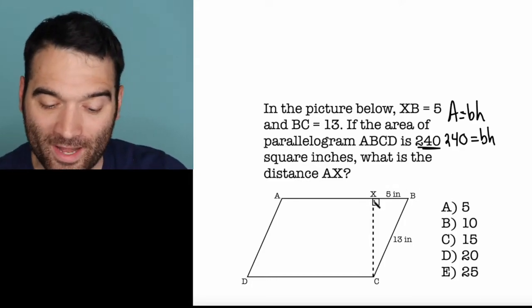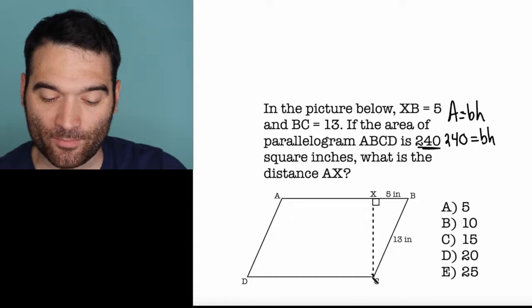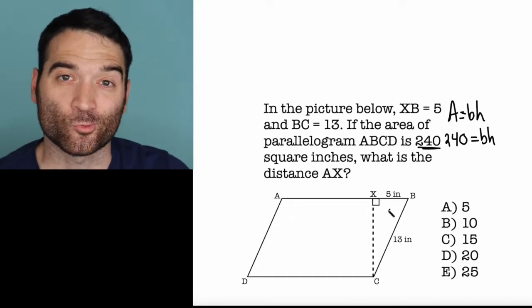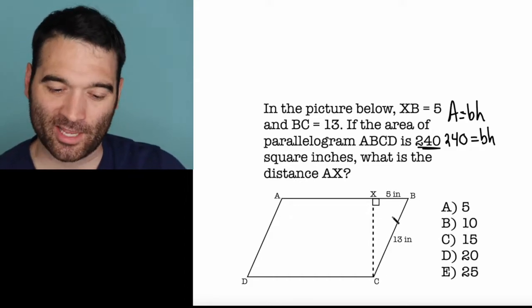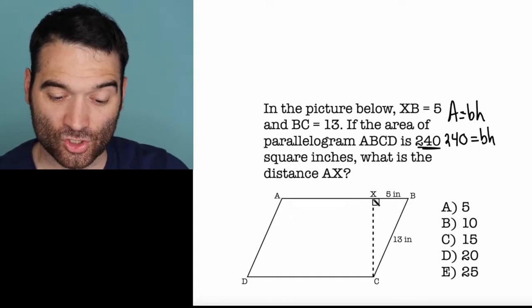Now, what is the height right there? XC. Well, look at this shape right here. Do you recognize something? It's a right triangle. You should always be on the lookout for right triangles. And we can use our Pythagorean theorem to solve this right here.